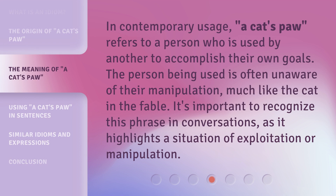In contemporary usage, 'a cat's paw' refers to a person who is used by another to accomplish their own goals. The person being used is often unaware of their manipulation, much like the cat in the fable. It's important to recognize this phrase in conversations, as it highlights a situation of exploitation or manipulation.